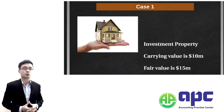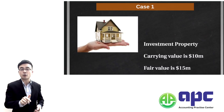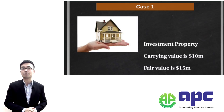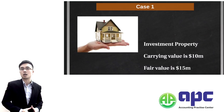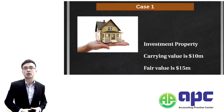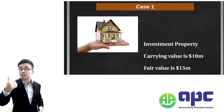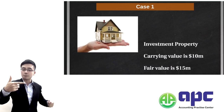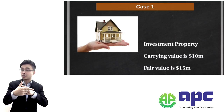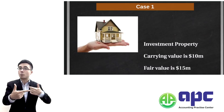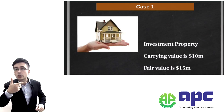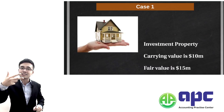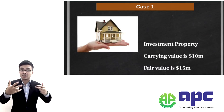According to the conceptual framework, we look at the definition of the asset in the elements section. The asset is the resource that is controlled or owned by the business as a result of a past event — this property belonging to our company because this building was built by our company. That's what is meant by past event.